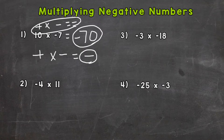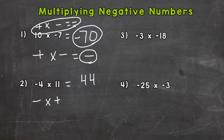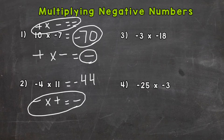Let's try number two. So we have a negative times a positive. Let's do 4 times 11 first, which gives us 44. Now when we have a negative times a positive, our answer is always going to be negative. So this is going to be negative 44. Number one and two are very similar — positive times a negative and negative times a positive — both situations give us a negative answer.